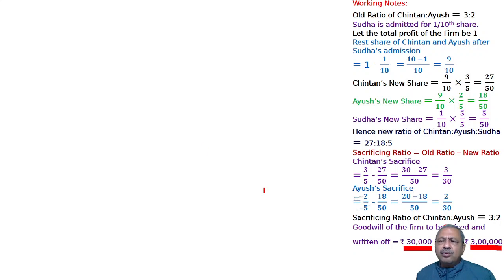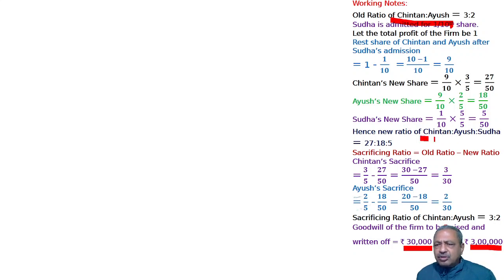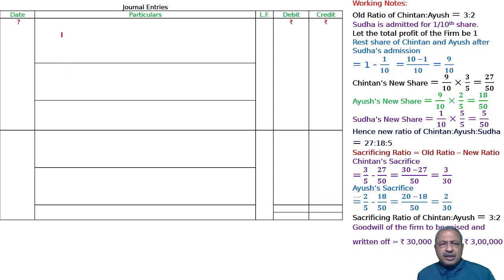Write up 3 lakh as goodwill for Chintan, Ayus, and Shudha in their new ratio. Start writing the journal entry.